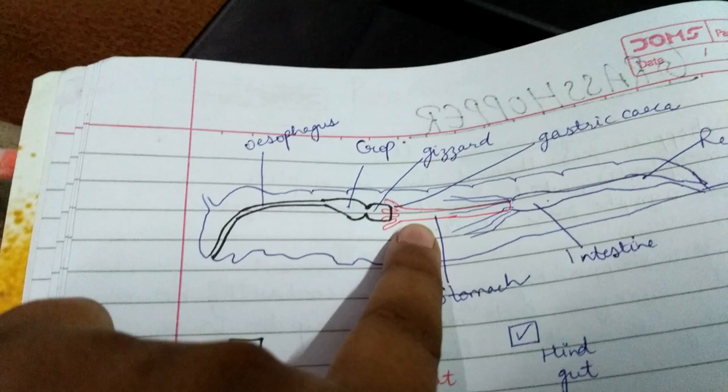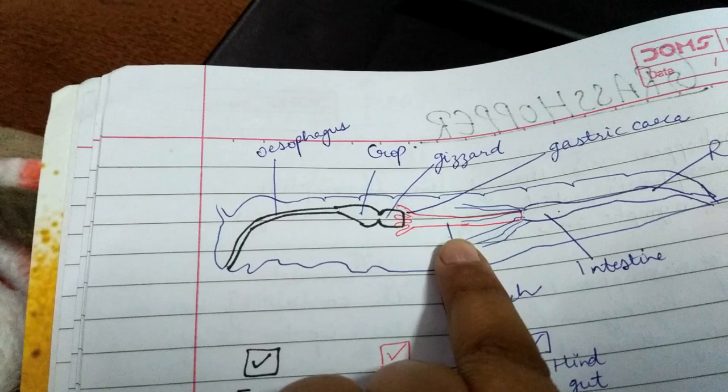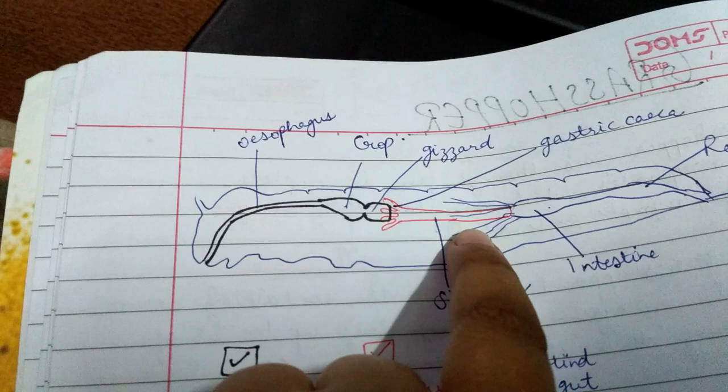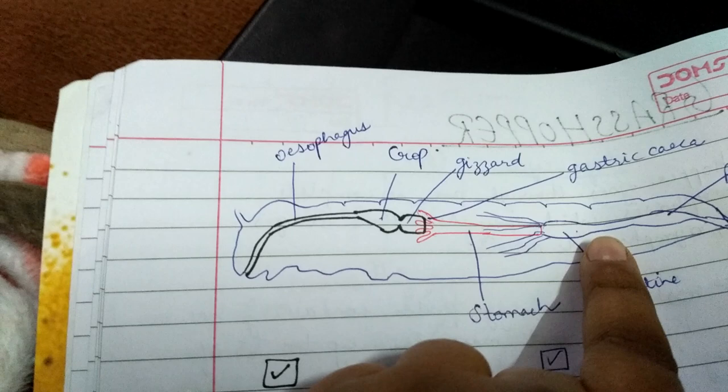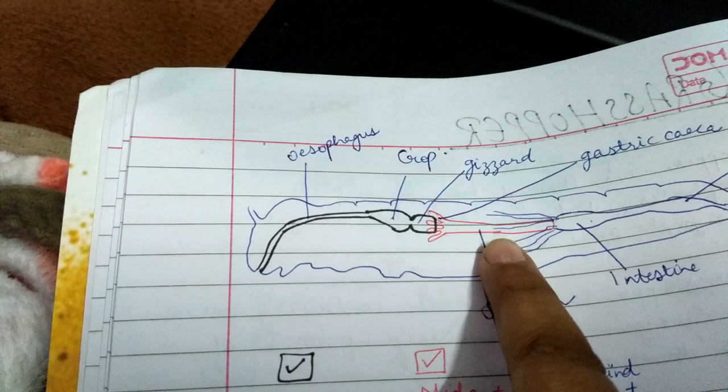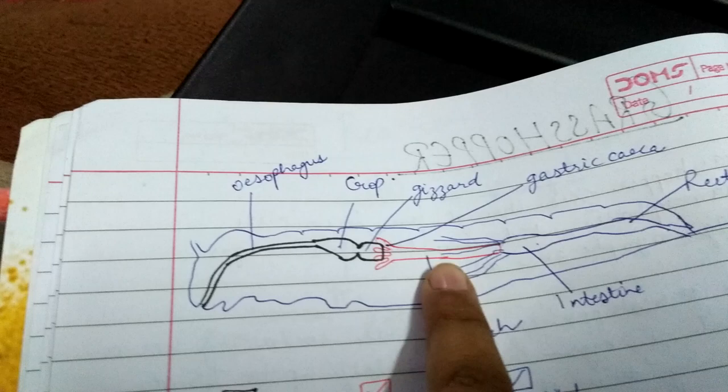The stomach is in midgut, and it is the only part of the alimentary canal which helps in digestion of food. It is endodermal in origin and has no cuticular lining, so it helps in digestion of food. Hindgut is also composed of cuticular lining as it is ectodermal in origin, so it is also not involved in digestion of food. Only midgut is involved in digestion of food as it is endodermal in origin and has no cuticle.